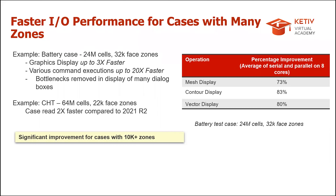This difference is more visible if you're working with more than 10,000 zones. If you just have two or three zones in your CFD simulation, you may not be able to tell the difference because even in previous versions you may not have suffered any lag in accessing the GUI features. But if you have more than 10,000 cells, you'll start to see a difference for the better.